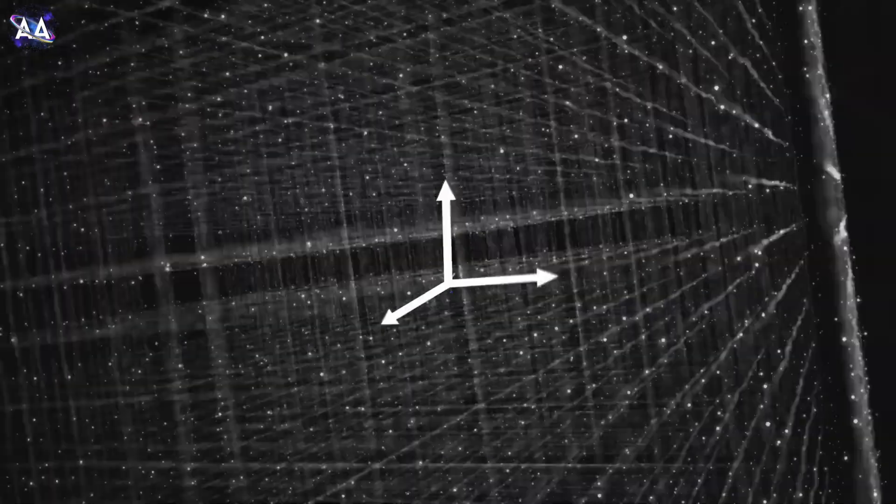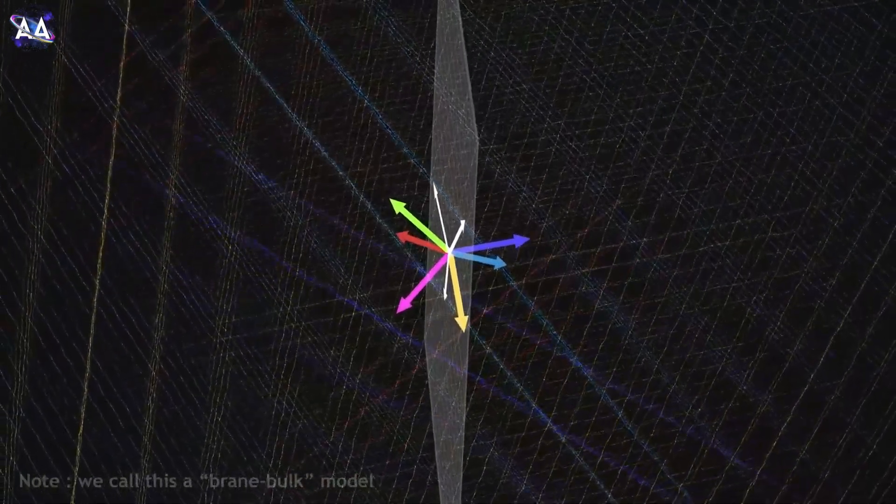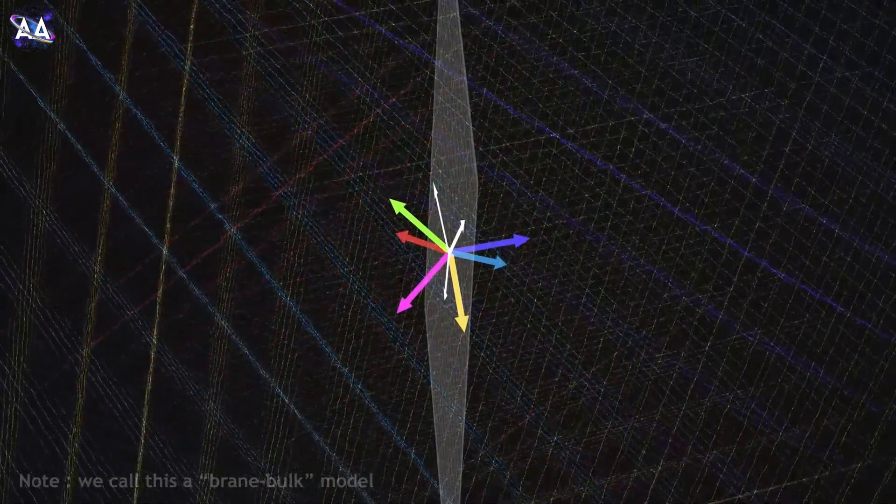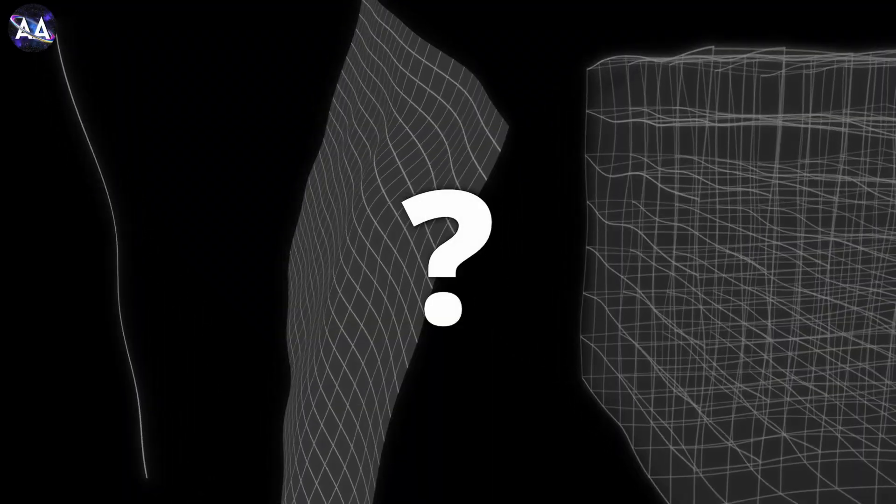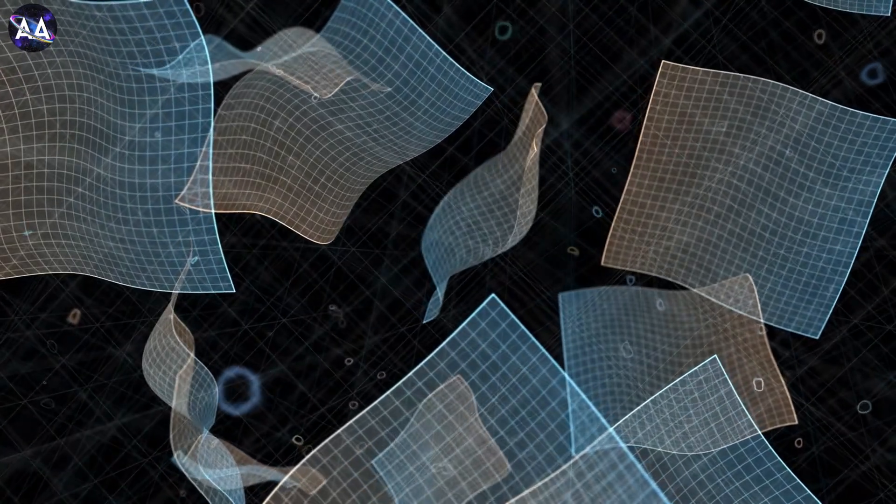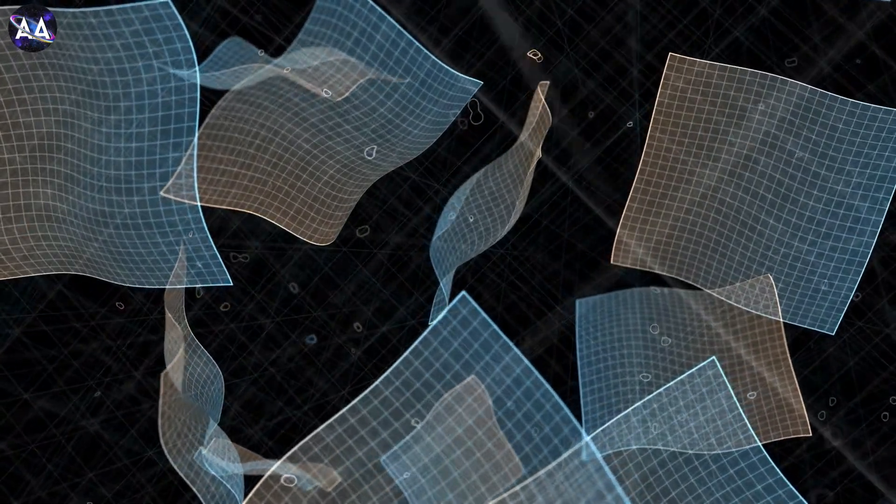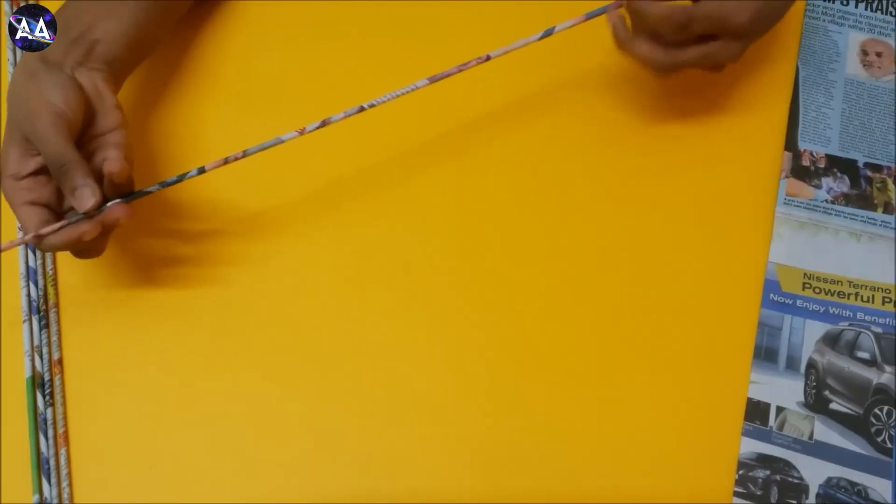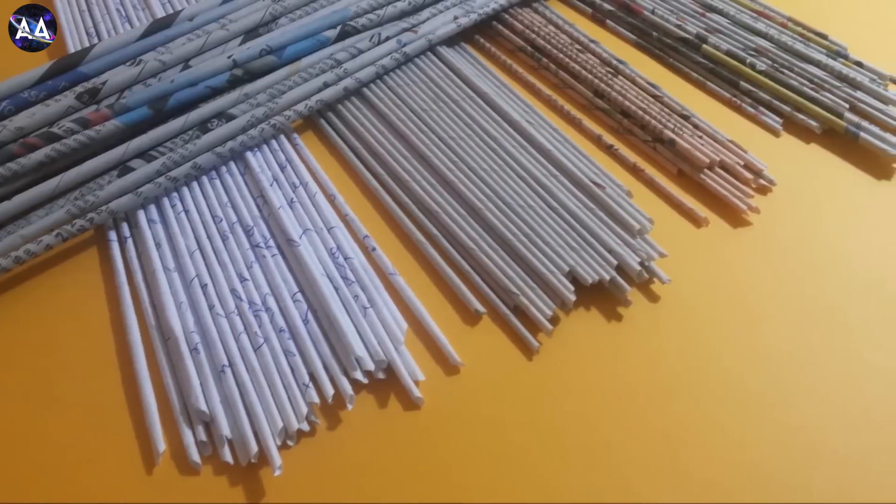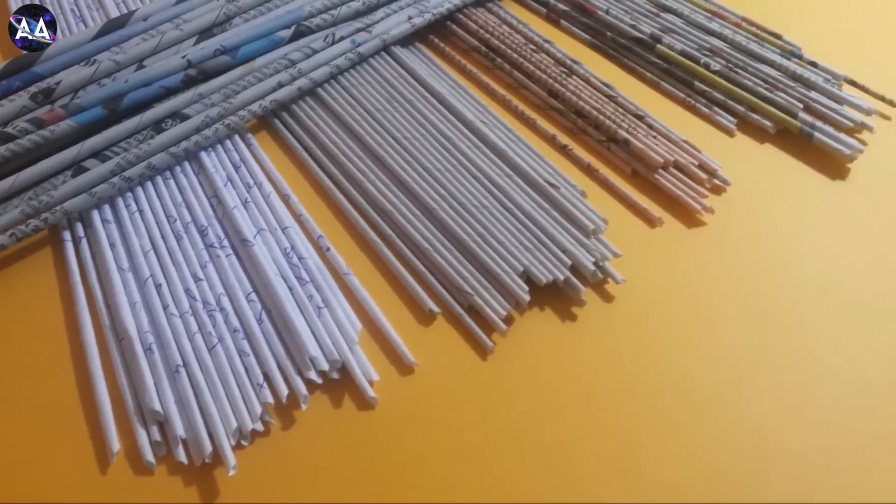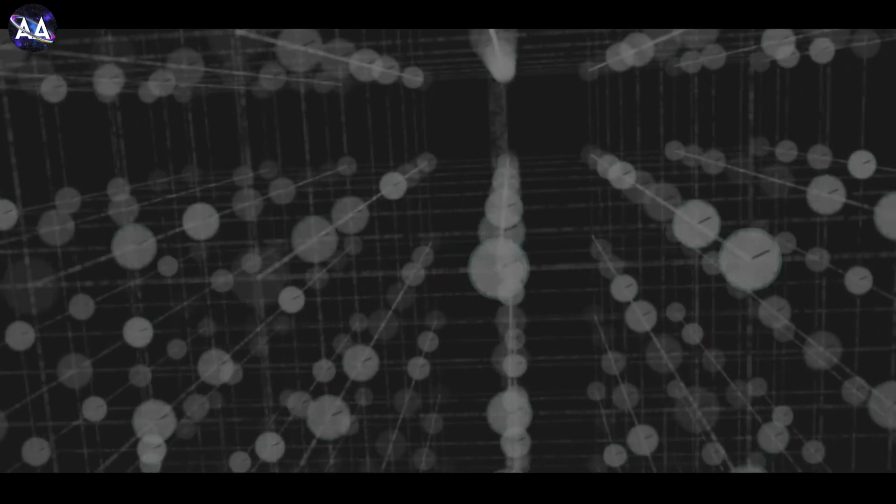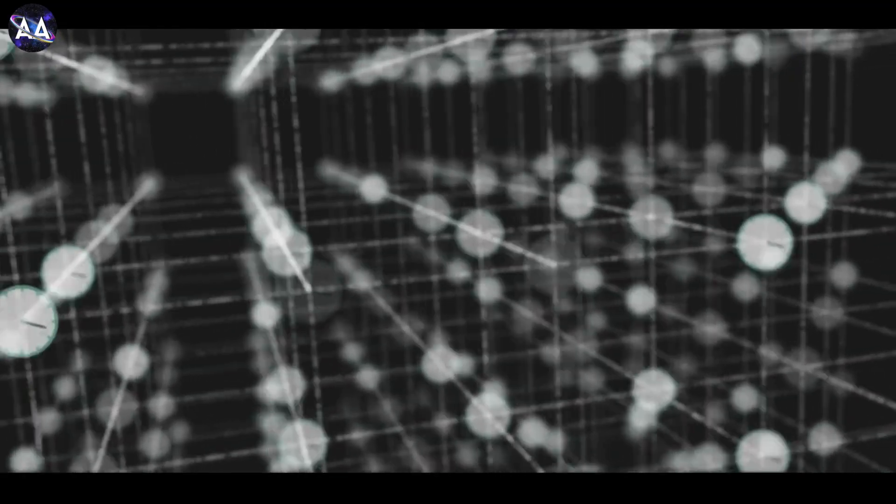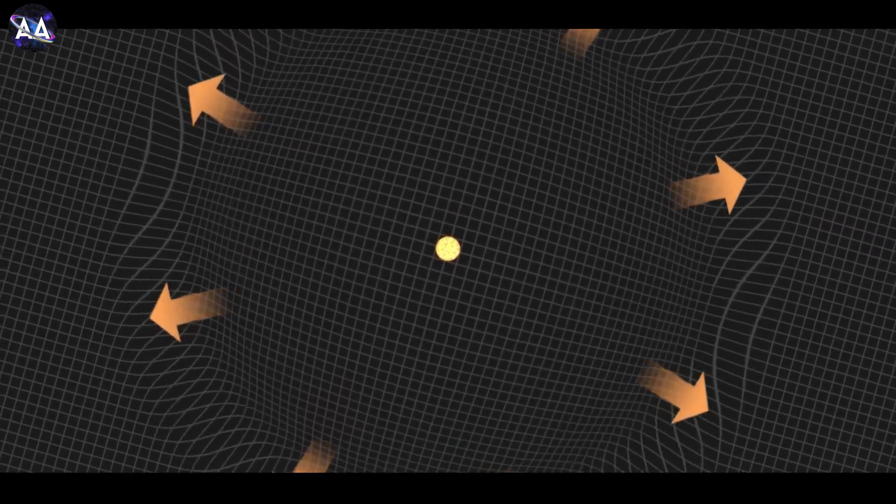M-theory introduces us to a universe with 11 dimensions, 10 spatial and 1 for time. But if we only experience three dimensions of space, where are the others? The extra dimensions are compactified, meaning they're curled up so small that they're nearly impossible to detect. Imagine rolling up a piece of paper into a tiny tube. From far away, it looks like a line, but up close, you see the circular dimension. Similarly, these hidden dimensions could hold the key to understanding the fundamental forces of nature.